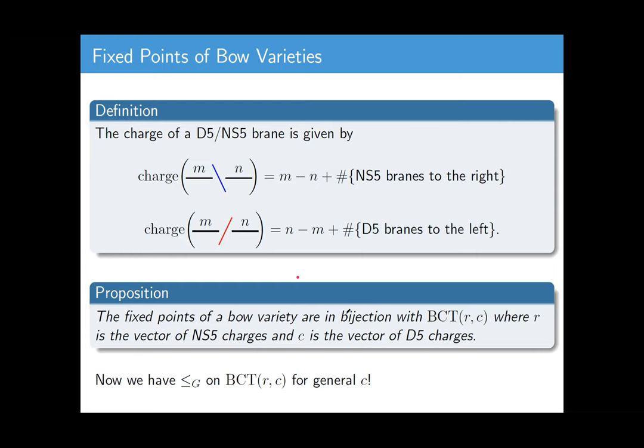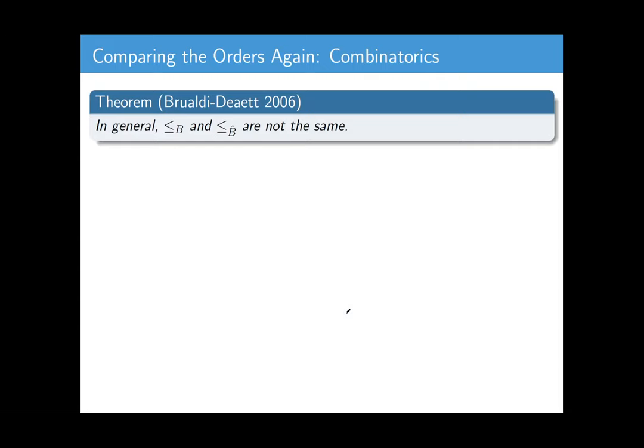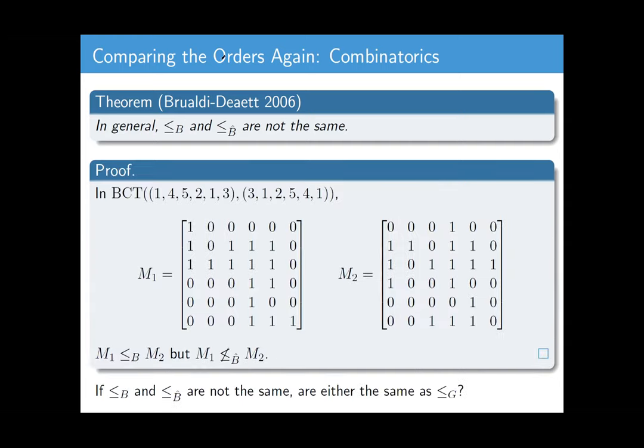And before I can be sure, some bad news. Turns out that the two combinatorial orders, in general, are not the same. They happen to be the same if the column sums were one, but otherwise, they're not. This was first proven by Brualdi and Deaett in 2006. And to prove this, here's a counterexample. Here's a pair of 6x6 matrices that are related in one partial order, but not in the other. As far as we know, this is the smallest counterexample that anyone's found. This set of BCTs has 89 elements. So the fact that these two orders are not the same was not obvious for quite some time.